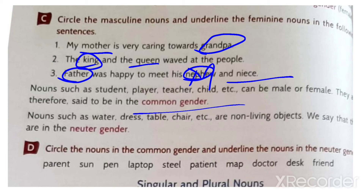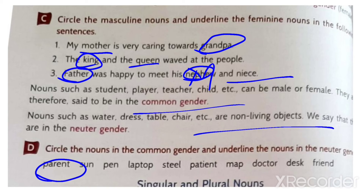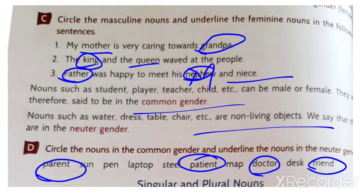Circle the nouns in common gender and underline the nouns in neutral gender. Neutral gender refers to non-living things. Common gender includes parent, patient, doctor and friend, because we cannot determine a particular gender - they could be male or female.